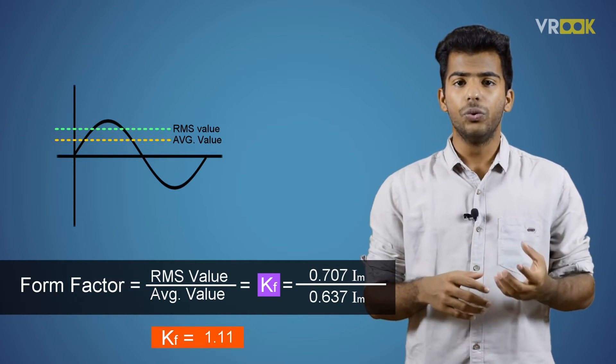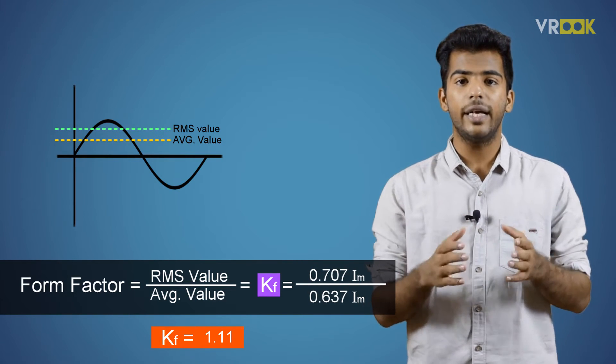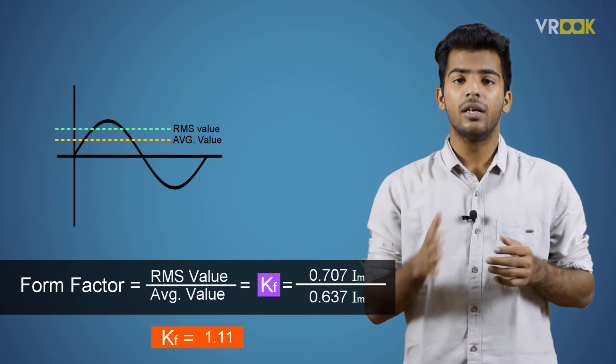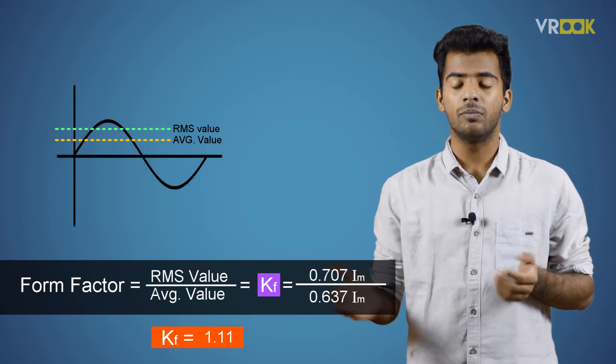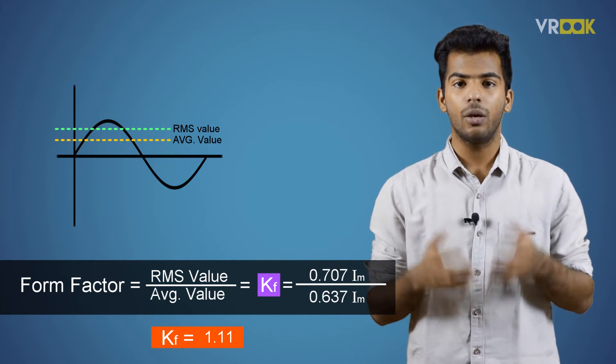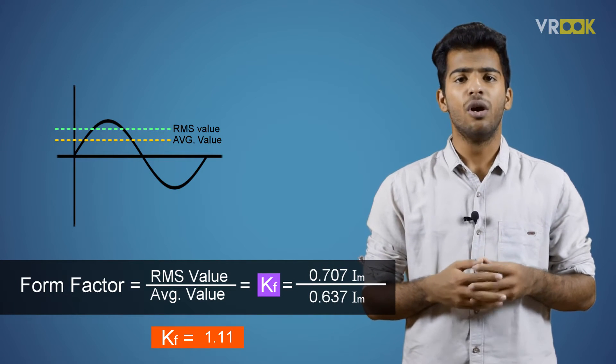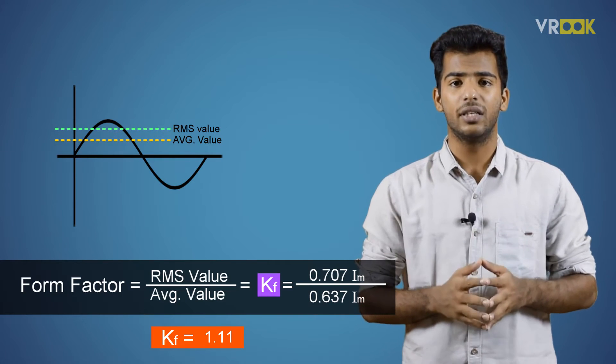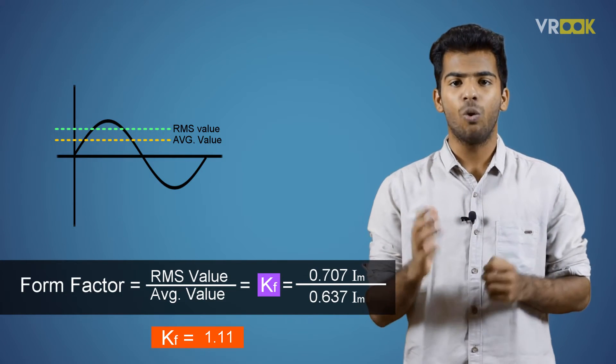It's true even in the case of alternating voltage that will be 0.707 Im by 0.637 Im, which is again 1.11. So, for a sinusoidal voltage or current, the form factor will be 1.11.